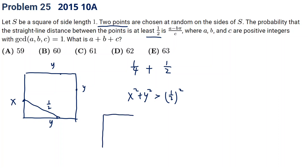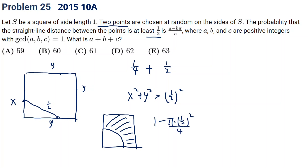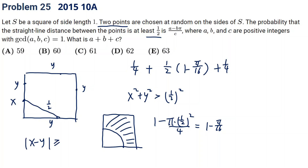This is a circle with radius one-half, and greater than means outside the circle. The probability for this region is one minus pi times radius squared divided by 4, since it's a one-quarter circle. So this is one minus pi over 16. Since there's a one-half chance of being on the adjacent side, the contribution is one-half times (one minus pi over 16). This handles the adjacent side case.